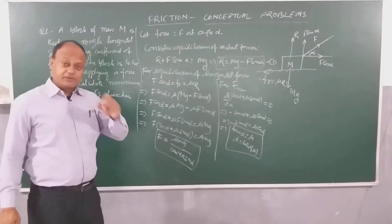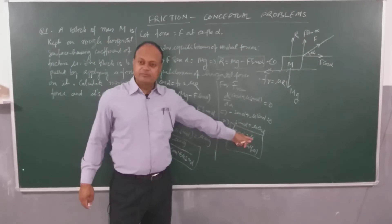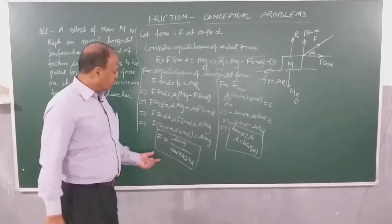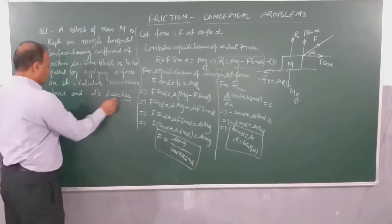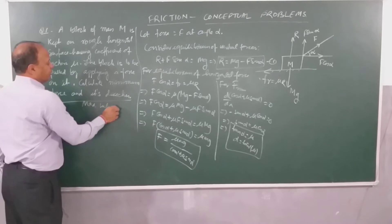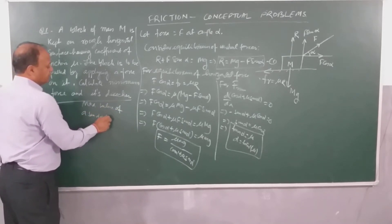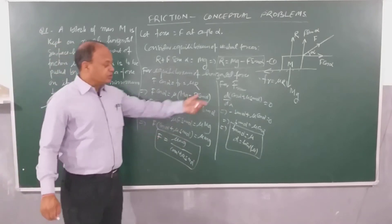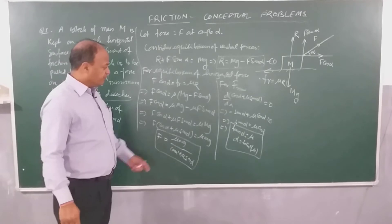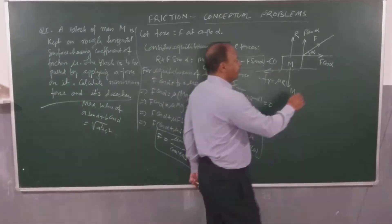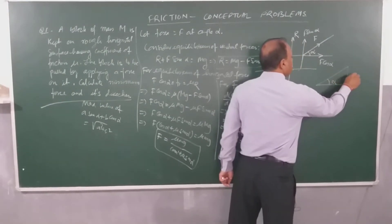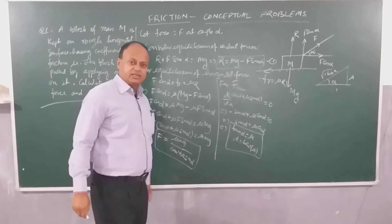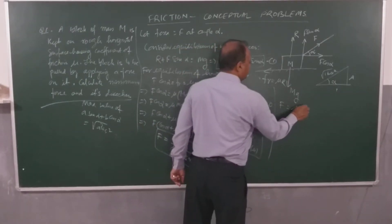So you have to remember: if I want the force to be minimum, then tan alpha should equal mu, or alpha equals tan inverse of mu. Once I know tan alpha equals mu, I can calculate cos alpha and sin alpha. From the triangle: opposite is mu, adjacent is 1, hypotenuse is root of (1 plus mu squared). So cos alpha equals 1 divided by root(1 plus mu²) and sin alpha equals mu divided by root(1 plus mu²).